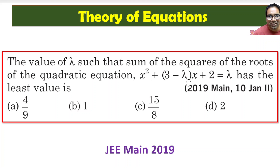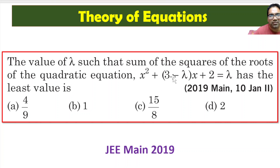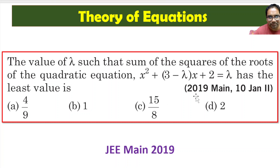Hi friends. Here we are given this quadratic equation: x squared plus (3 minus λ) times x plus 2 equals λ. We need to find the value of λ such that the sum of the squares of the roots of this equation has the least value. If α and β are the roots, then α squared plus β squared should be minimum.